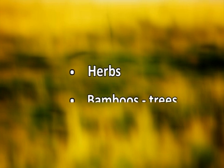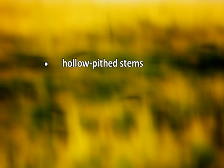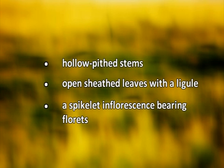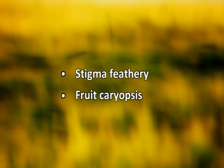Members are herbs only — the exception being bamboos, which are trees. They have hollow stem systems and open sheathed leaves with a ligule at the inner junction with the leaf blade. They are also distinctive in having a spikelet inflorescence. The spikelet bears either one or numerous florets. The stigma is feathery, and the fruit is technically called a caryopsis.